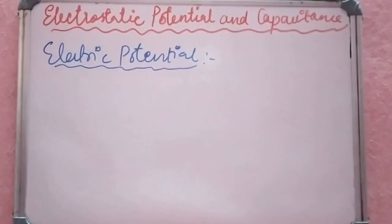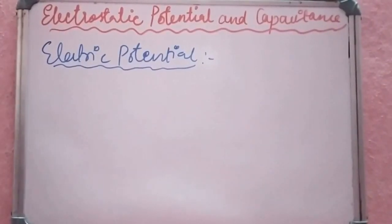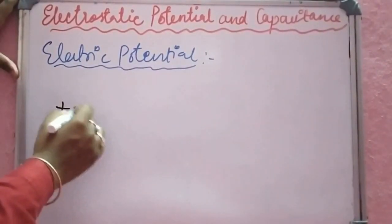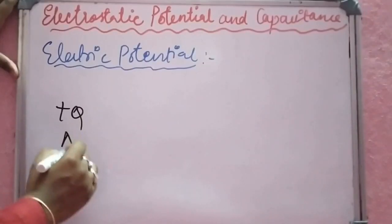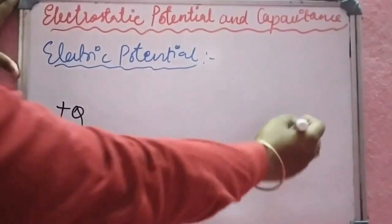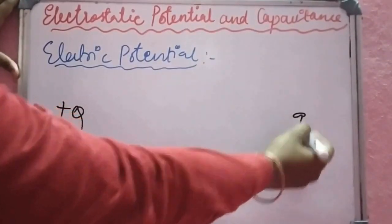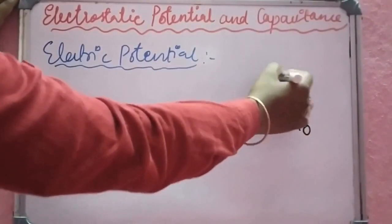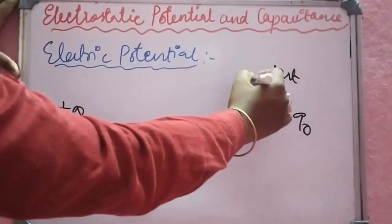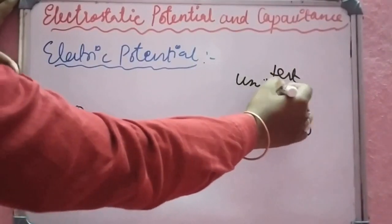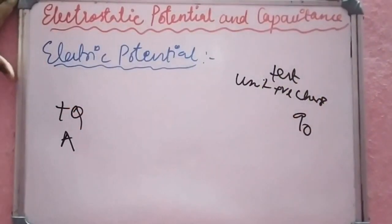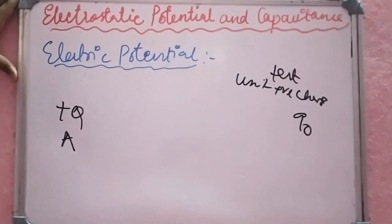Electric potential at a point in the electric field: Q is the charge at a point — this is not a test charge. Q0 is the test charge. The test charge is a unit positive charge; it is a small positive charge.